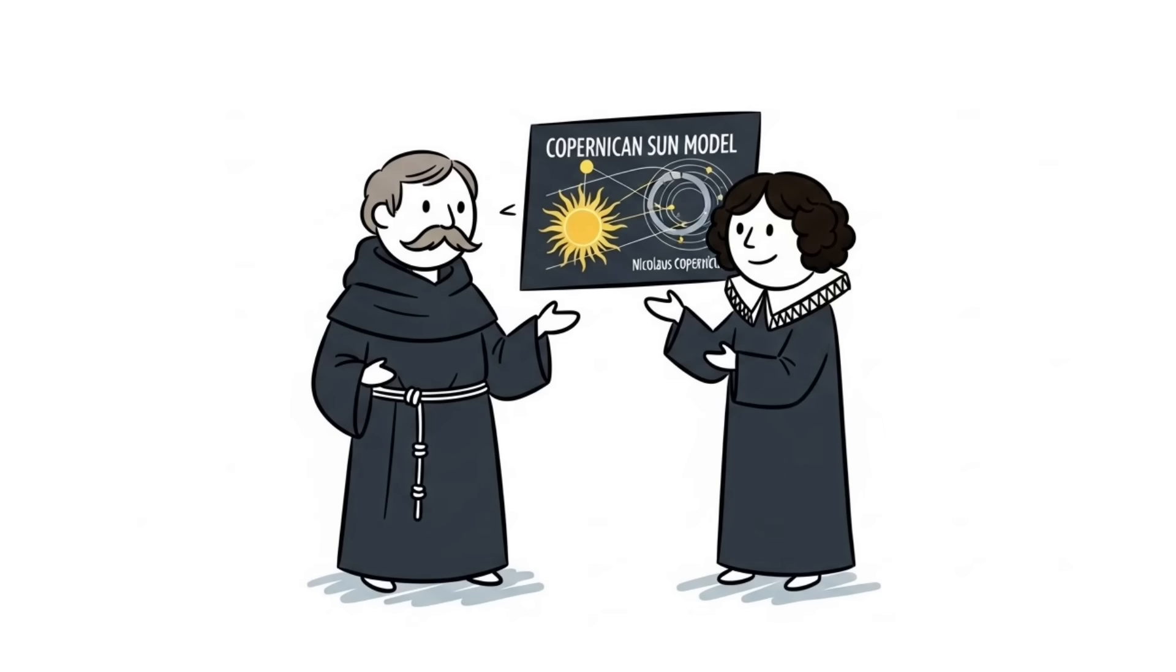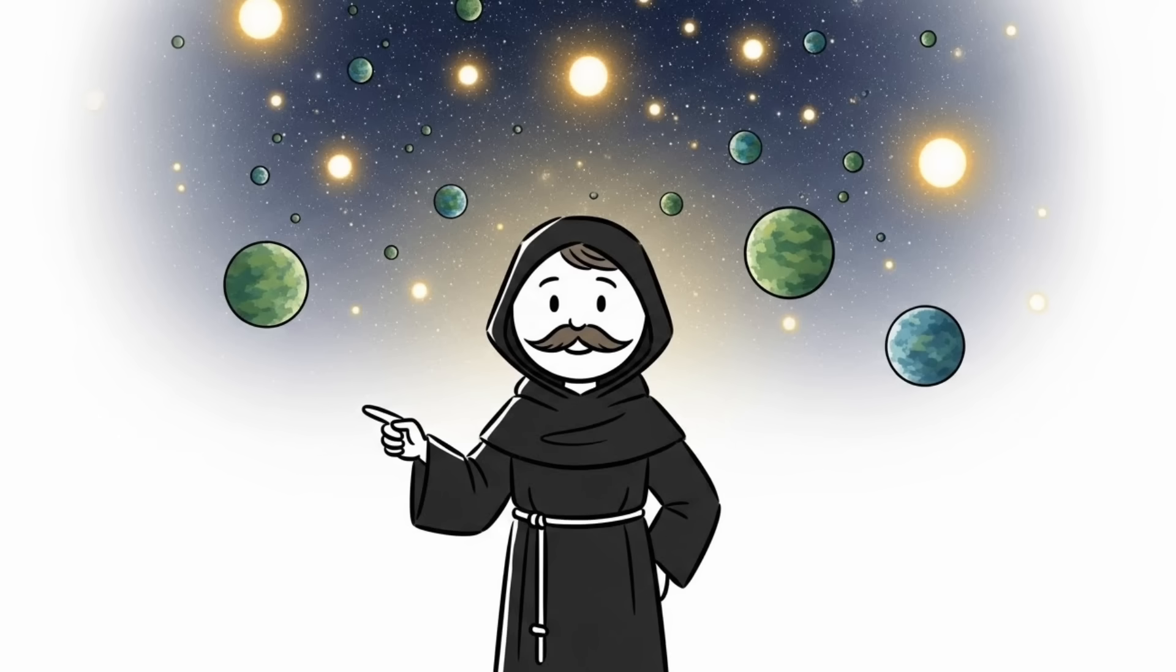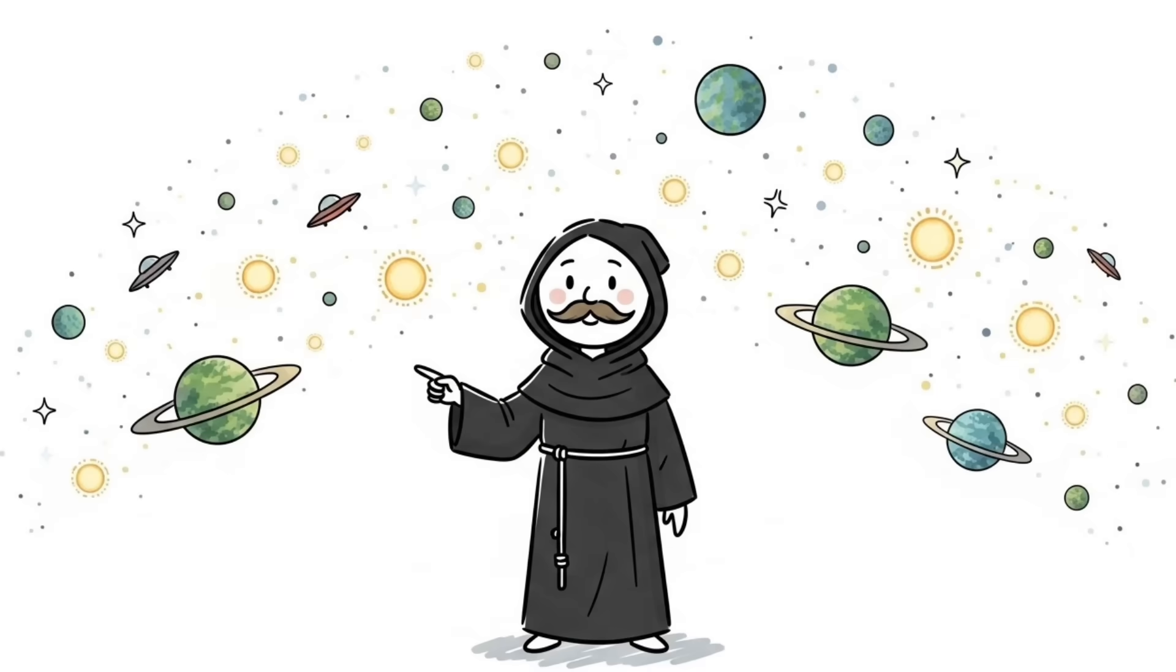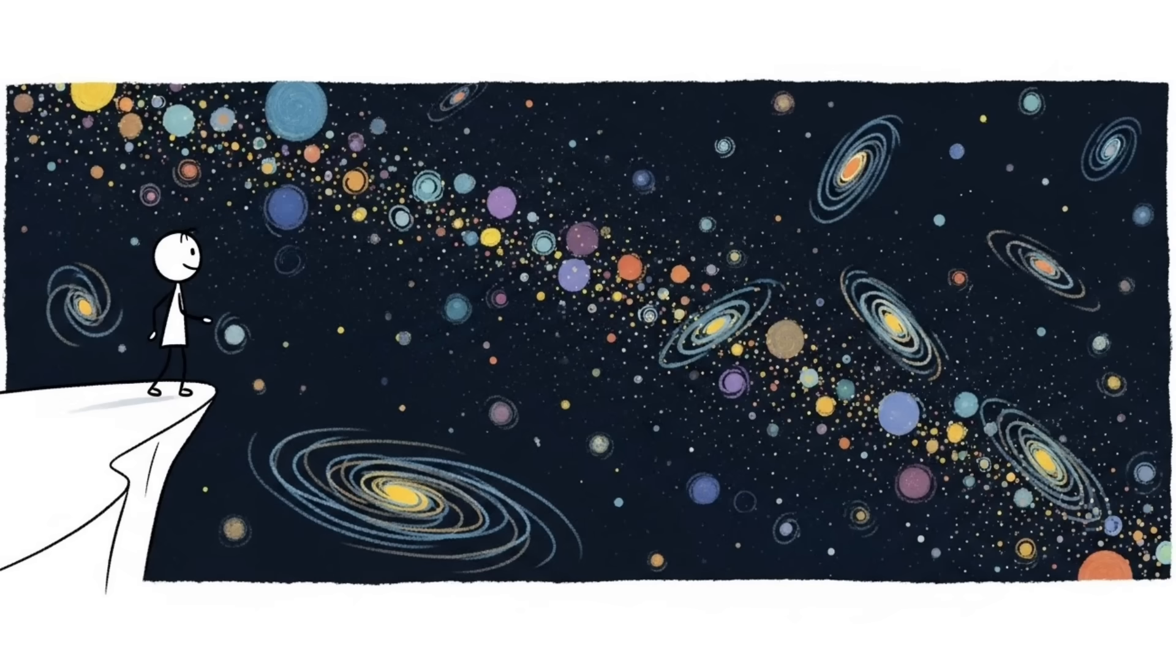He didn't just agree with Copernicus that the earth moved around the sun. He went further. He claimed the stars were distant suns with their own planets, and some of those planets might even have life. The universe was infinite with countless worlds.